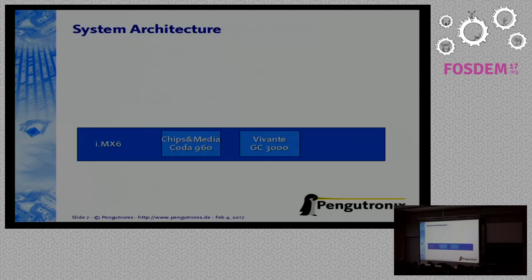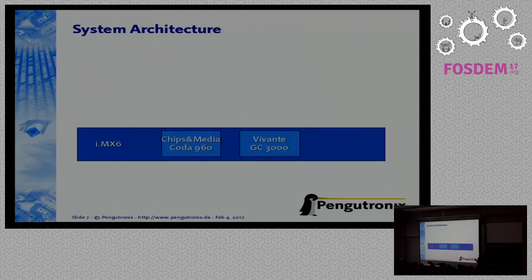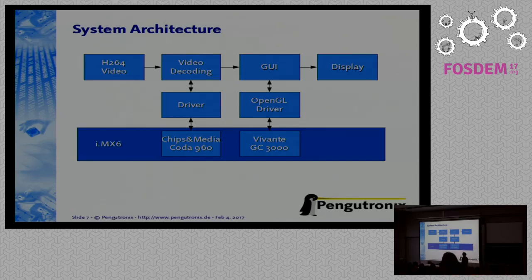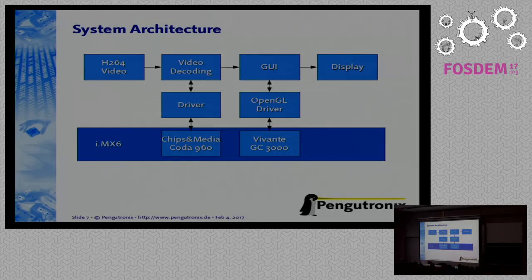For the system we are using an iMX6 SoC which is built by Freescale. The SoC features a Chips&Media CODA video decoder and a Vivante GC3000 GPU, at least in the PLUS platform — if you are using something before the PLUS variant you have a Vivante GC2000 there. On top of these hardware features we need a driver for the decoder and an OpenGL driver for our GPU, plus video input, software to control the decoding, a graphical user interface using OpenGL, and then output to a display.